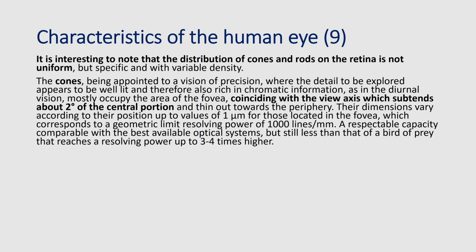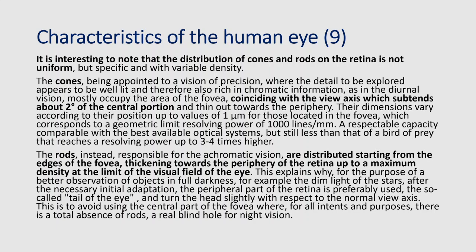This is a very good resolution for our sensor, comparable with the best available optical systems, but still less than that of birds of prey, which reach a resolving power three or four times higher. Rods, on the contrary, are responsible for achromatic vision — a sort of grayscale vision. They are distributed starting from the edges of the fovea, thickening towards the periphery of the retina, up to maximum density at the limit of the visual field.